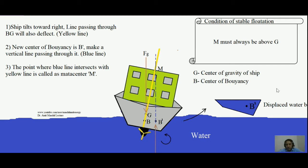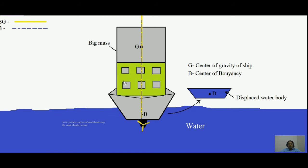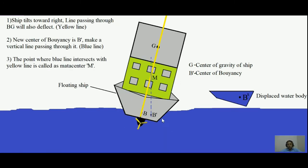This can be understood by another example in which M is below G. Here, a ship has a very big mass kept on it, so the center of gravity has been shifted toward the upper side. Again we draw the yellow line BG and a vertical line through B. Now if this ship is tilted toward the right, the displaced water body changes shape and the new center of buoyancy B dash shifts toward the right. Drawing a vertical line through B dash, it intersects at M — but in this case M is below G.